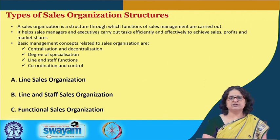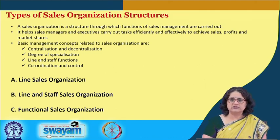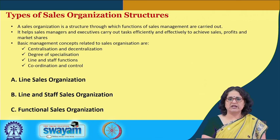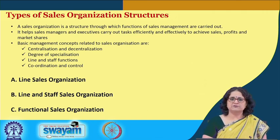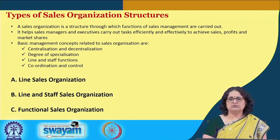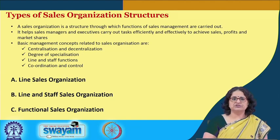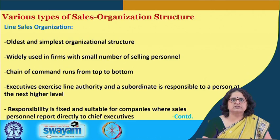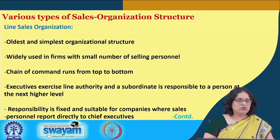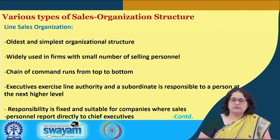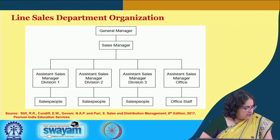In the previous lecture, I did speak about the line sales organizations, where it is more of the superior issuing orders and directives, and the people at the lower level are supposed to abide by them. The line and staff roles are where there is staff or support activity in the form of people who help the line. In functional sales organizations, highly specialized roles are given importance. Line sales organizations are the simplest and the oldest organizational structures, where the chain of command runs from top to bottom.